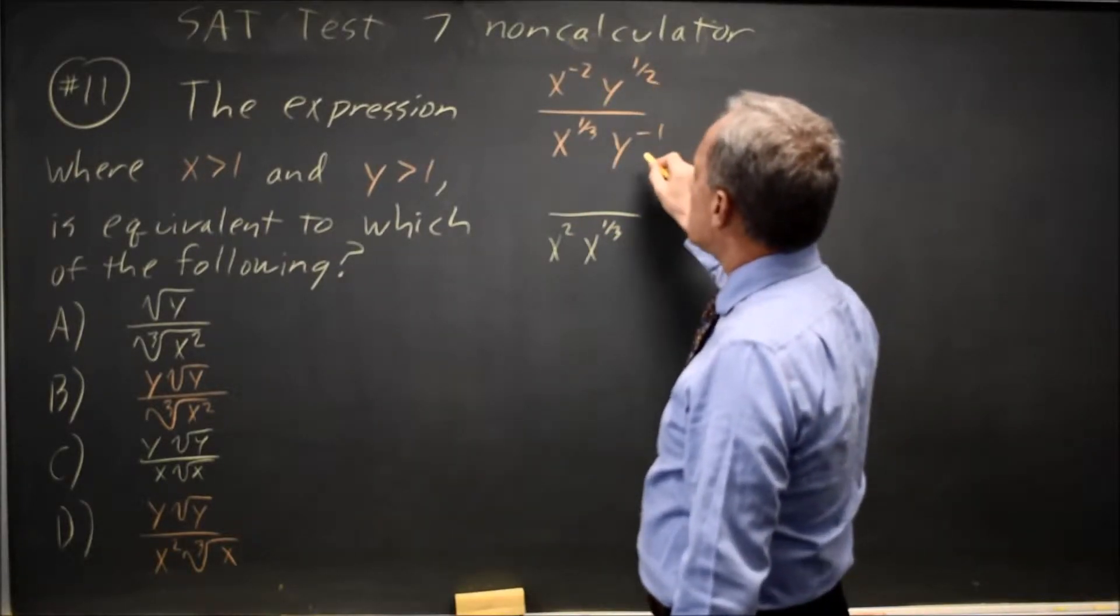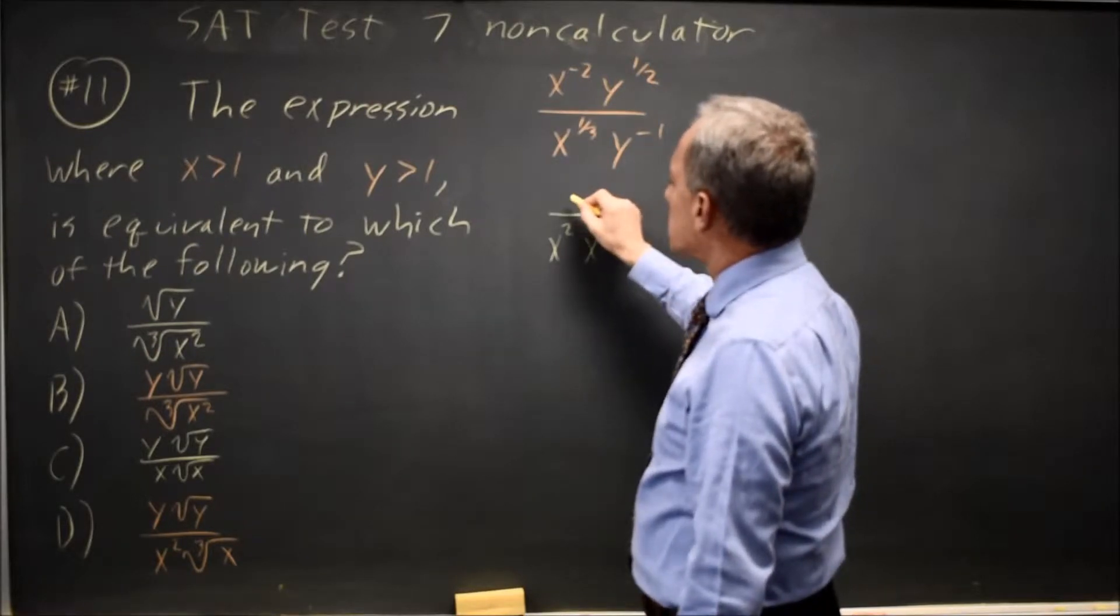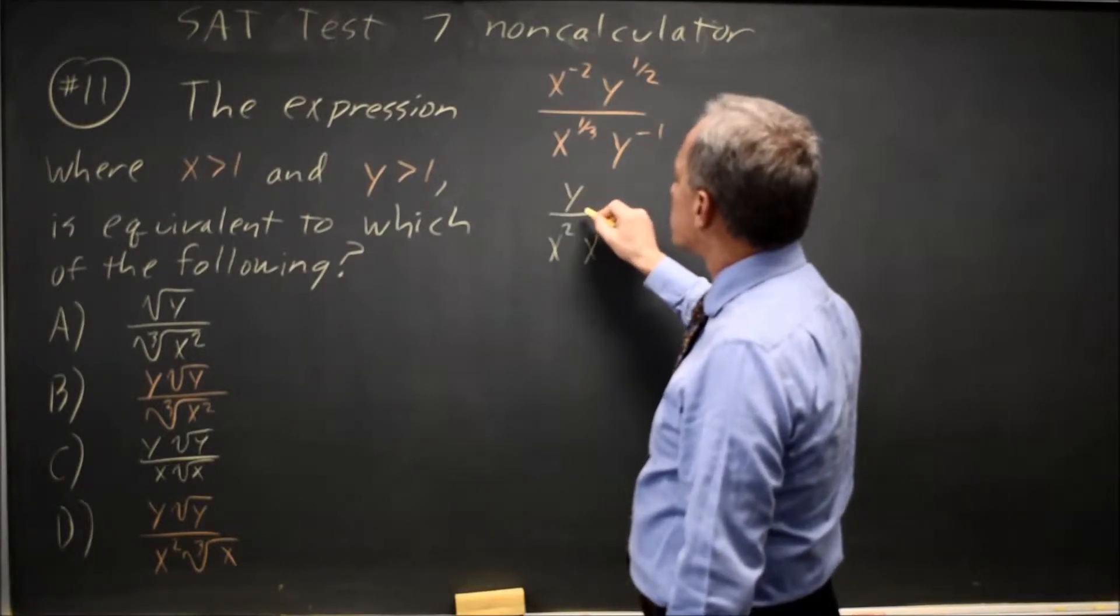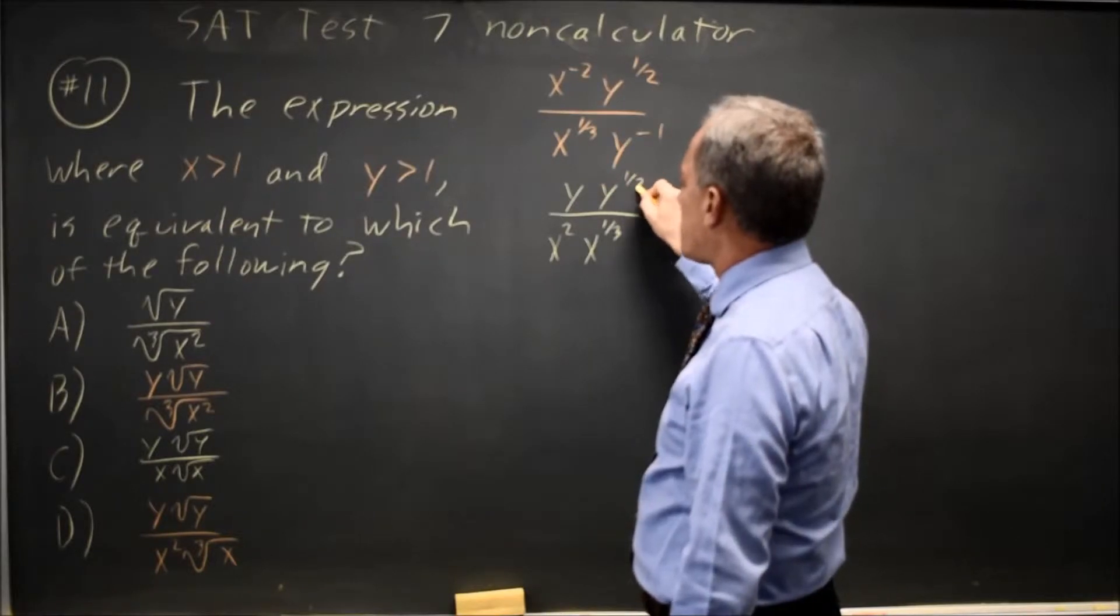Now work just with the y. y to the negative 1 in the denominator is the same as y to the first in the numerator, so that's y times y to the 1 half.